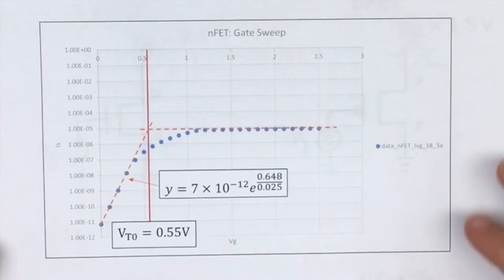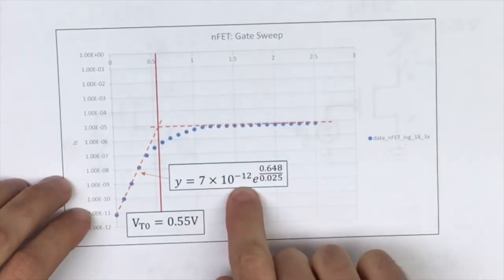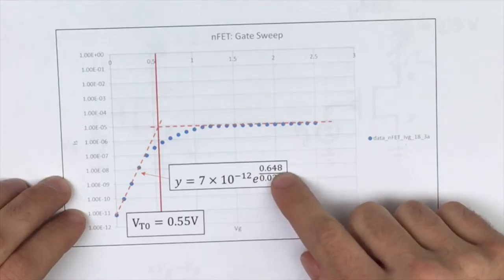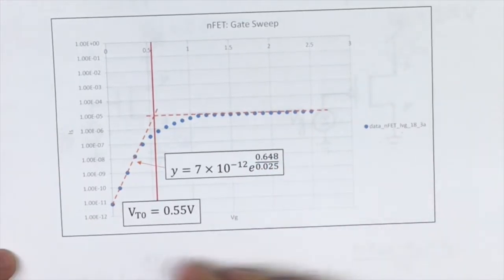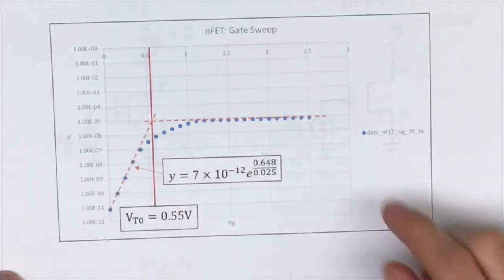When we did our gate sweep, we have our curve fit right here with our saturation current and our kappa value, our threshold voltage, which was estimated from the intersection of these two lines.